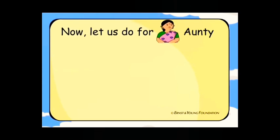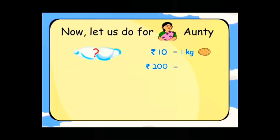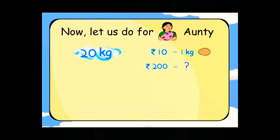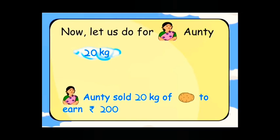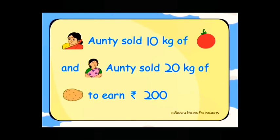Now let us do for Radha aunty. Rupees 10 is equal to 1 kg. Rupees 200 divided by 10 is equal to 20 kgs. Radha aunty sold 20 kgs of potatoes to earn rupees 200. Sita aunty sold 10 kgs of tomatoes and Radha aunty sold 20 kgs of potatoes to earn rupees 200.